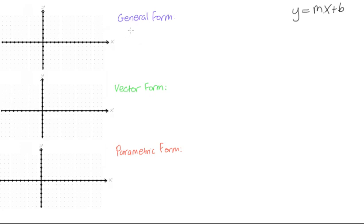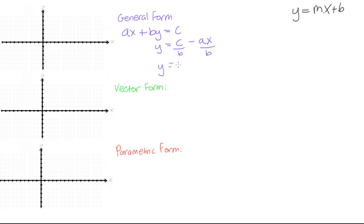The first one is called general form and it has the form ax plus by is equal to c. We have a y and an x and a couple other numbers and letters in here. If we rearrange it, y is equal to c minus ax over b, which gives us y is equal to negative a over b times x plus c over b.